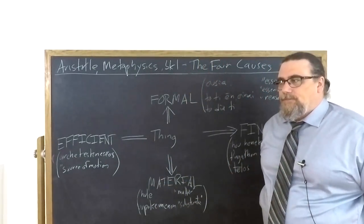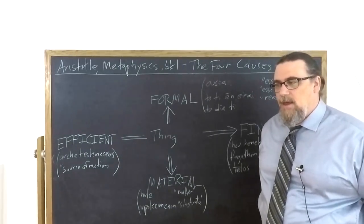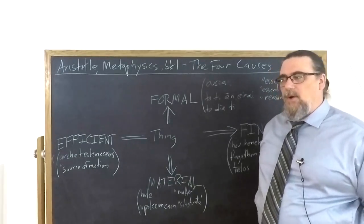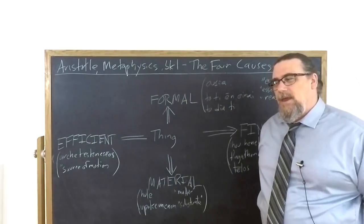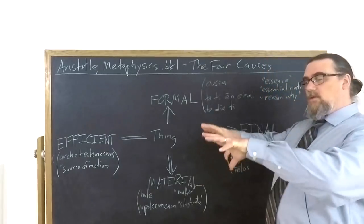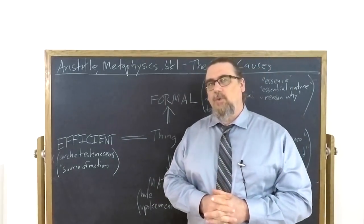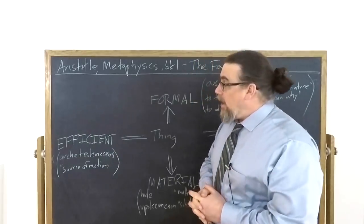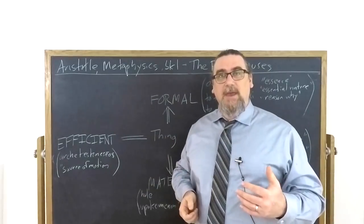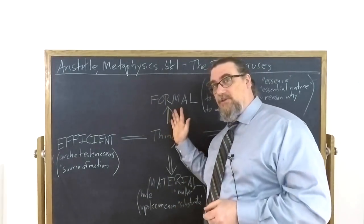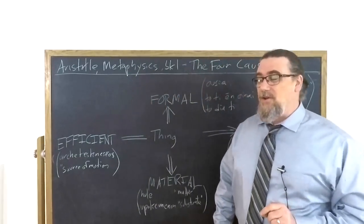Now, Aristotle says that's not enough to actually understand the totality of the thing, why it is the way it is, how it came to be. And the other two causes that he brings in, he talks about as opposed to each other or at least set at opposite ends. So the first of these is what we call the efficient cause. And the efficient cause is what brings that thing into being or produces it or introduces that shape to it or sets it in motion.